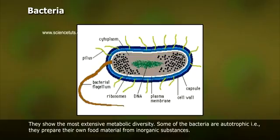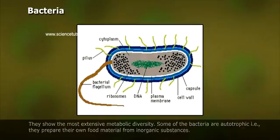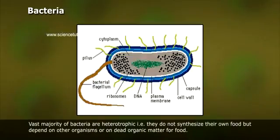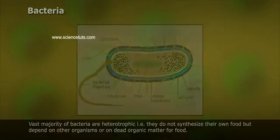They show the most extensive metabolic diversity. Some bacteria are autotrophic — that is, they prepare their own food material from inorganic substances. The vast majority of bacteria are heterotrophic — that is, they do not synthesize their own food but depend on other organisms or on dead organic matter for food.